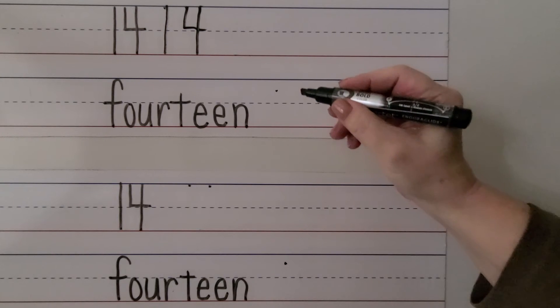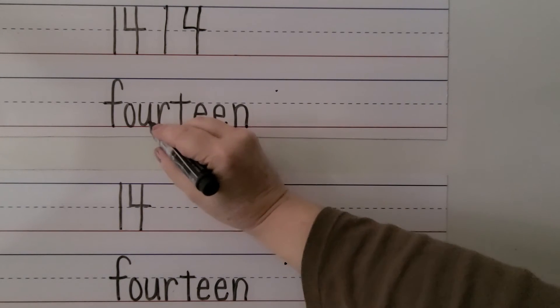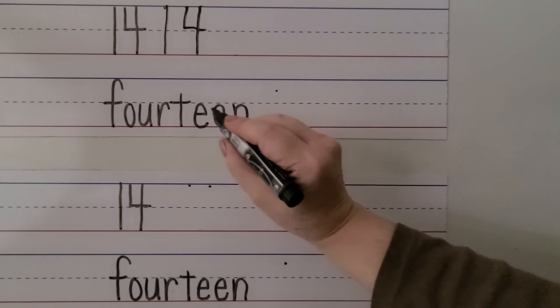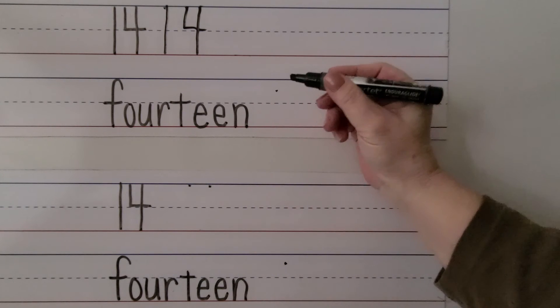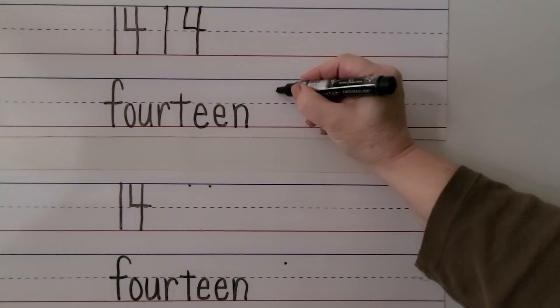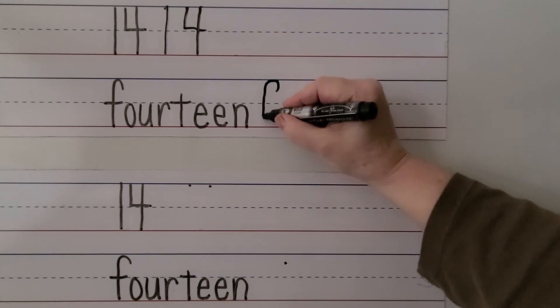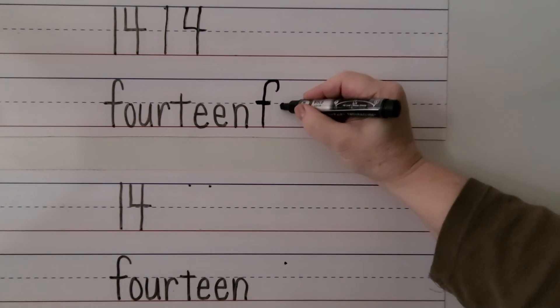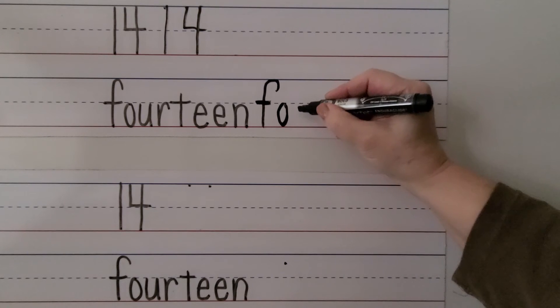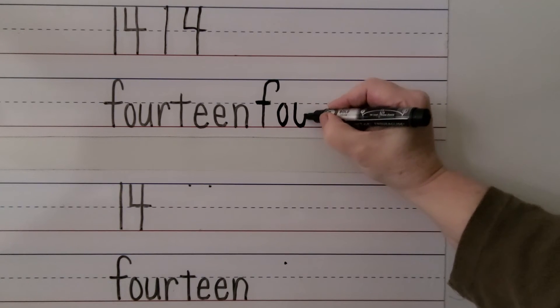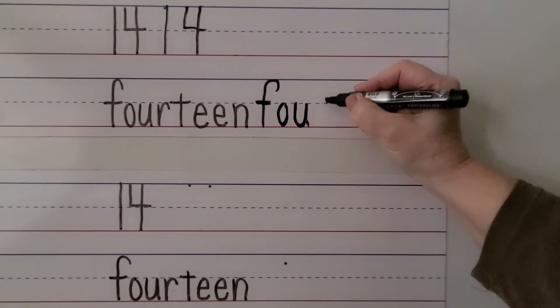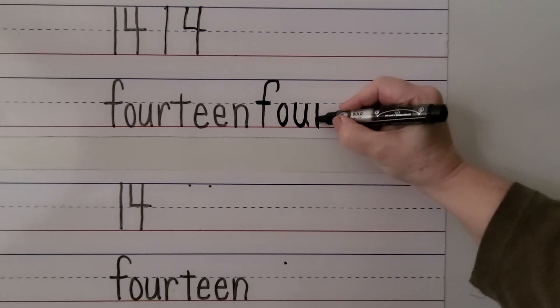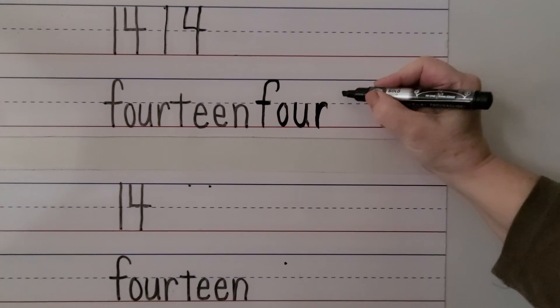We can write the word fourteen. We have F-O-U-R-T-E-E-N. See how it has teen just like 13. We make an F and we cross it pulling towards our hand. We make an O, U, R for four. Now we write the teen.